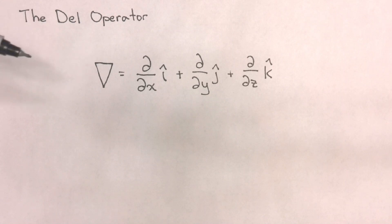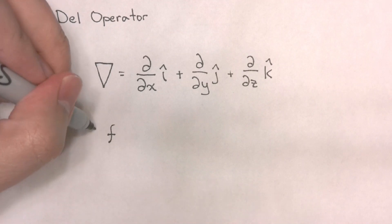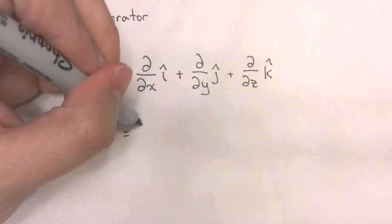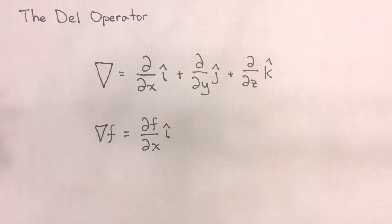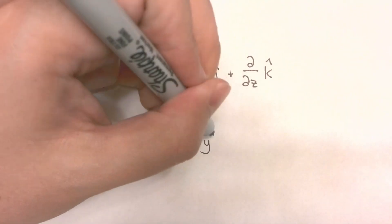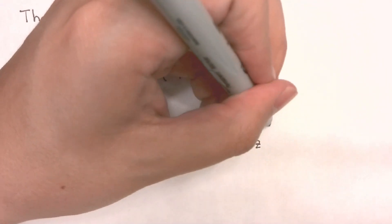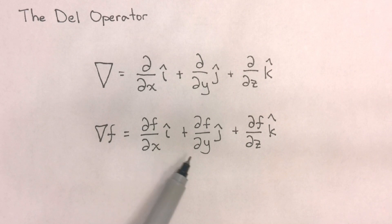In order for this to become a vector we need to apply this operator to a scalar. For example, if we define f as a scalar value, then applying the del operator to f gives us the gradient of f, which equals the partial change of f with respect to x in the x direction, plus the partial change of f with respect to y in the y direction, plus the partial change of f with respect to z in the z direction. Applying the del operator to a scalar value gives you a vector function.